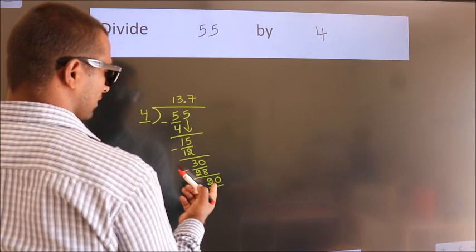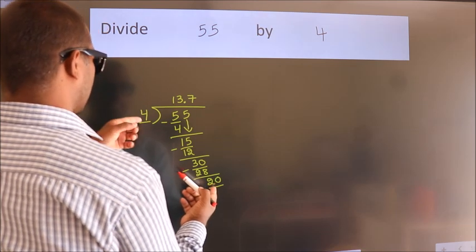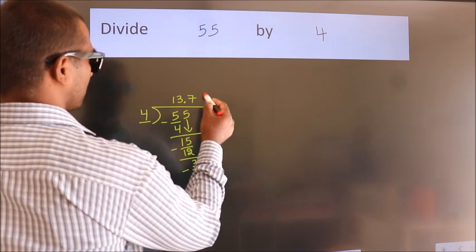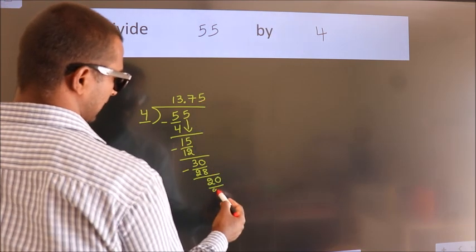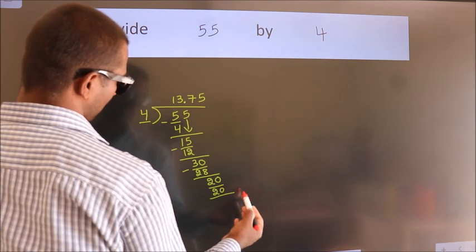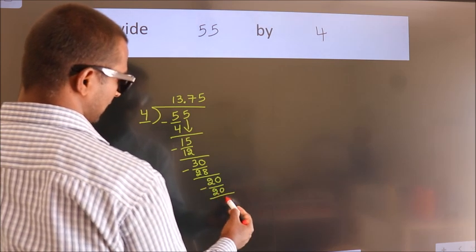So 20. When do we get 20? In 4 table. 4 5s 20. Now we subtract. We get 0.